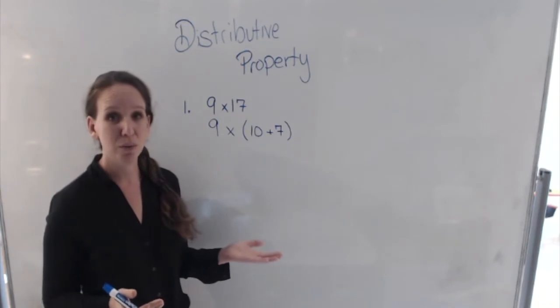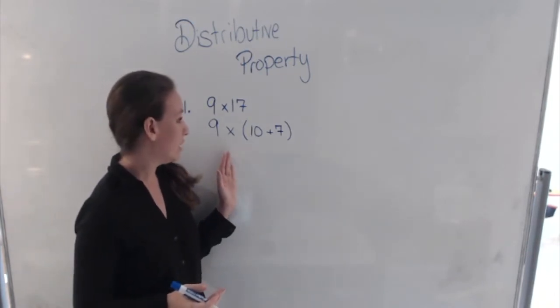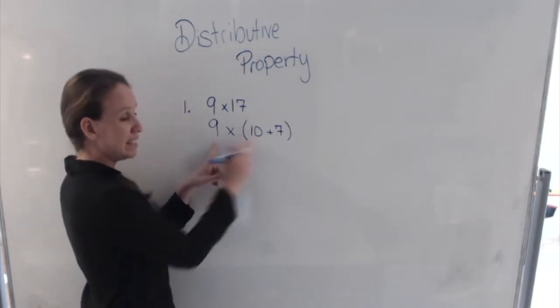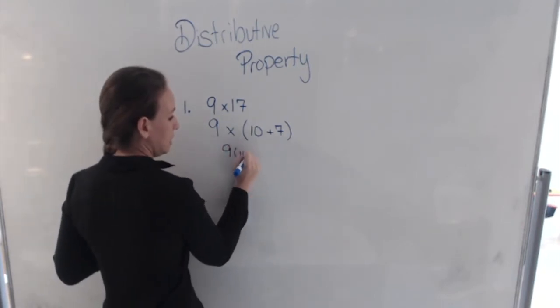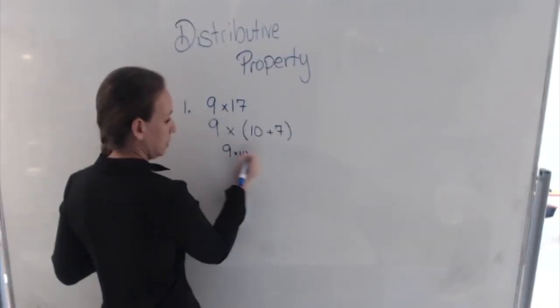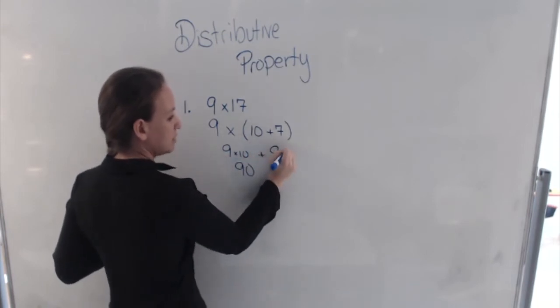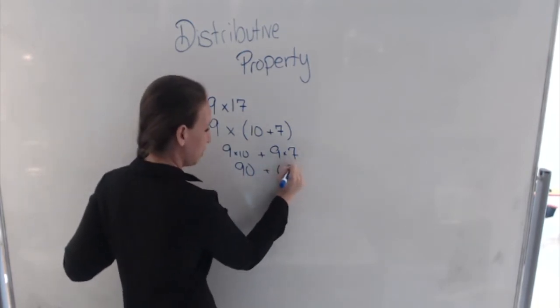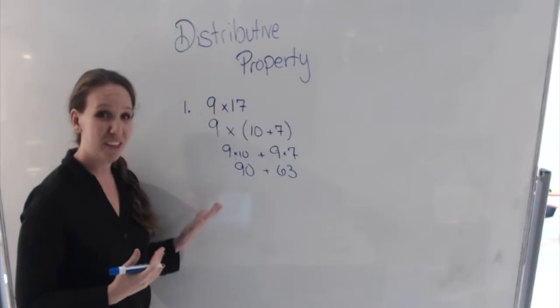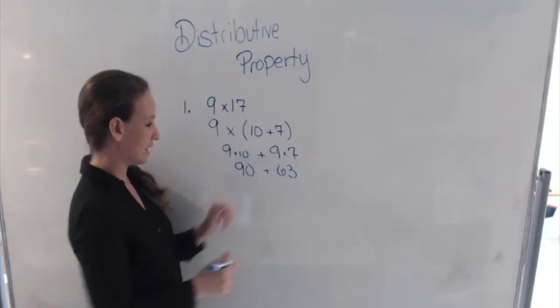So now, when I'm doing my multiplication, I can multiply 9 times 10, which is 90, plus 9 times 7, which is 63. So now we just add 90 and 63.